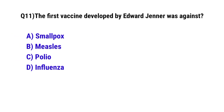Question number 11. The first vaccine developed by Edward Jenner was against. The correct option is A: smallpox.